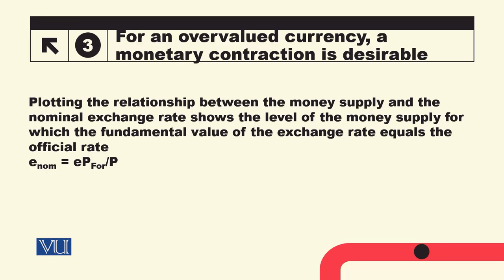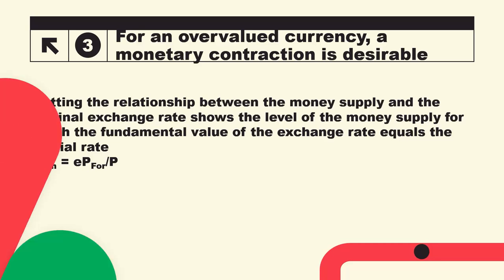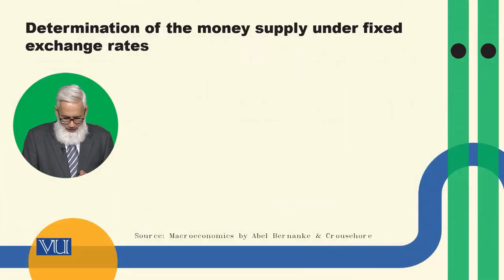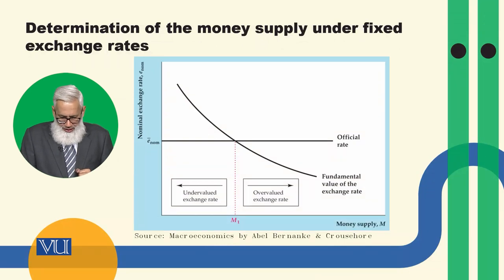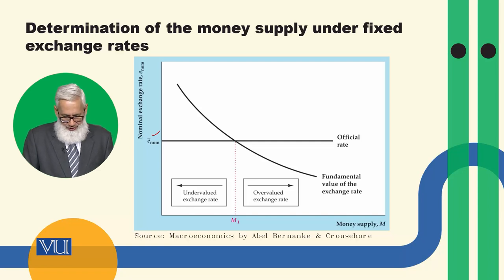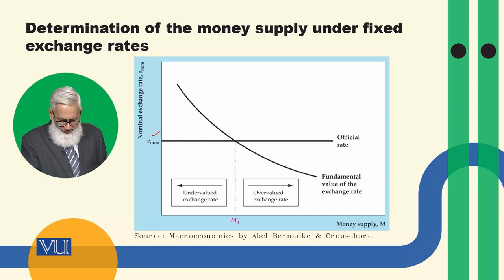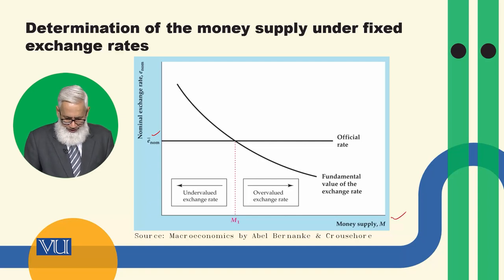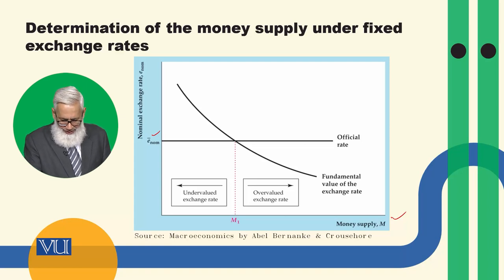Plotting the relationship between money supply and the nominal exchange rate shows the level of money supply for which the fundamental value of the exchange rate equals the official rate. On this diagram: the official exchange rate is fixed and shown as a horizontal line, the horizontal axis represents money supply, and the vertical axis represents the nominal exchange rate. The fundamental value curve is negatively sloped.